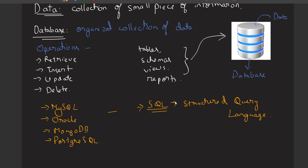In a relational database, the data is stored in the form of rows and columns - as a table. We can fetch and perform any kind of operations using SQL. This is the language we will learn after covering all the concepts of DBMS, like keys, normalization, etc.